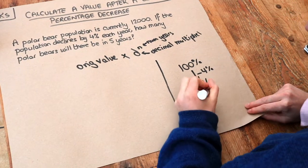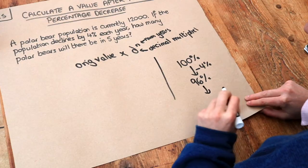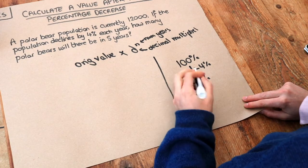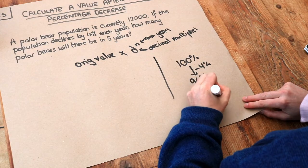And then we turn that into a decimal. Now to turn from a percentage to a decimal, we just divide by 100. And if we move the decimal point two places, 96% as a decimal is 0.96.